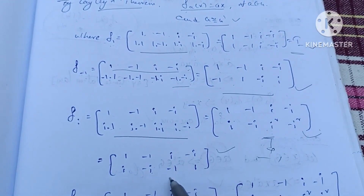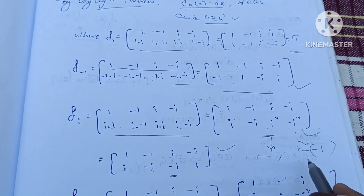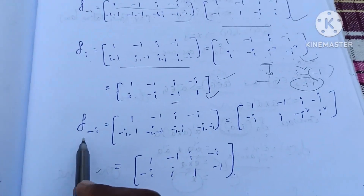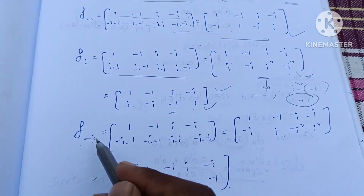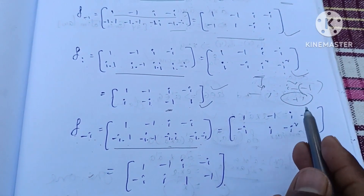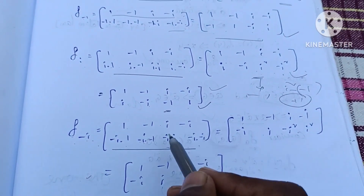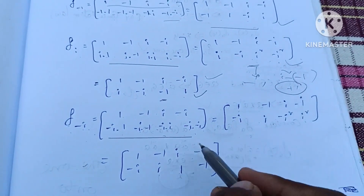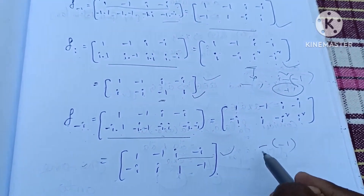i squared equals -1, and -i scaled: i square minus 1, minus i into minus equals plus 1. So 1 gets -i, -1 gets i. Next, f_{-i}: domain is 1, -1, i, -i. Values: -i into 1 gives -i, -i into -1 gives i, -i into i gives -i squared equals +1, -i into -i gives i squared equals -1.